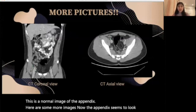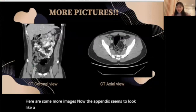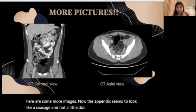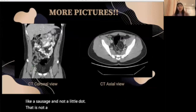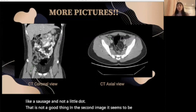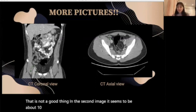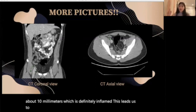Here are some more images. Now the appendix seems to look like a sausage and not a little dot — that is not a good thing. In the second image it appears to be about 10 millimeters, which is definitely inflamed. This leads us to our next topic about acute appendicitis.